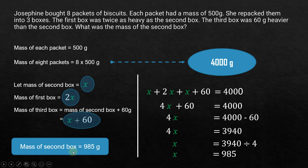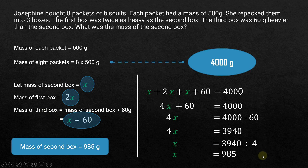The mass of the second box is equal to 985 grams. If you need to find the mass of the first box, substitute into 2x: 2 times 985 grams. For the mass of the third box, substitute into x plus 60: 985 plus 60 — that gives the mass of the third box. This is how we solve the same problem using algebra.